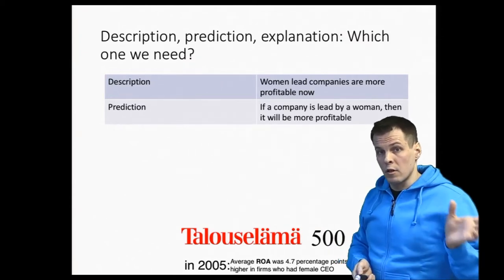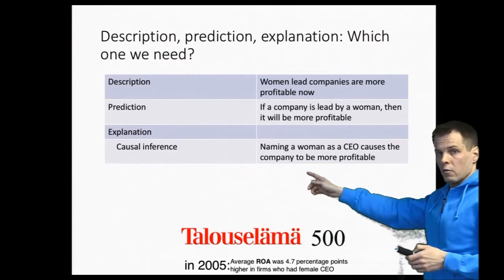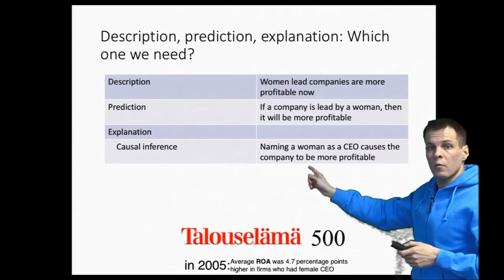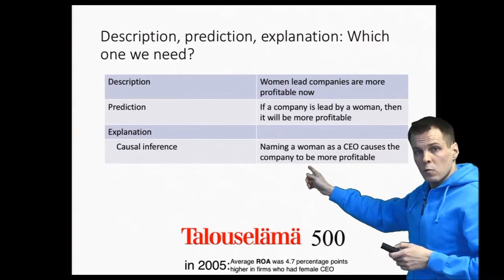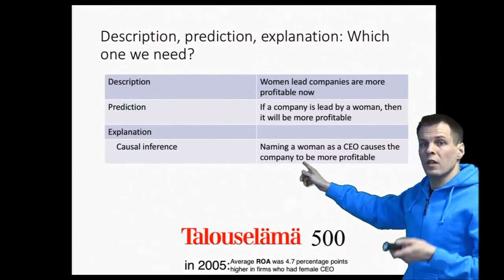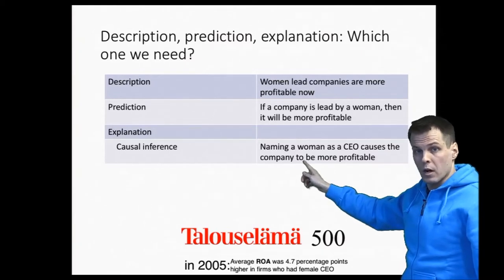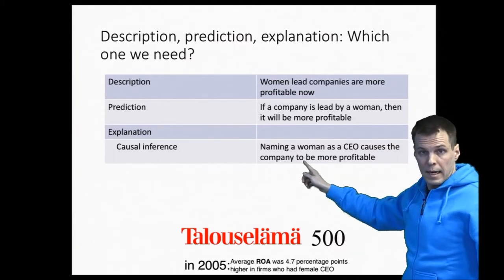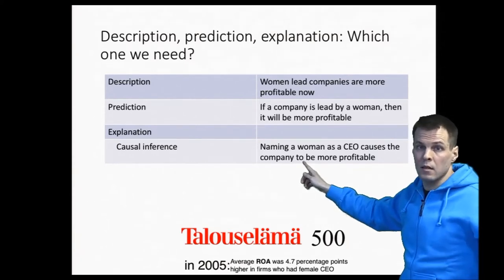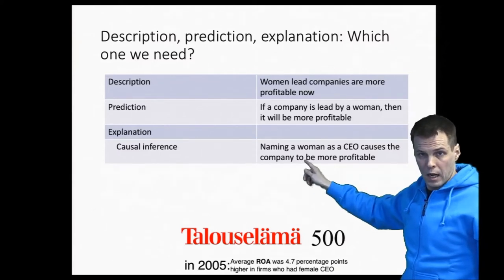Then we have the third step, which is causal inference: naming a woman as a CEO causes the company to be more profitable. Here we attribute the difference — we're not saying this is merely a correlational relationship. We attribute the difference in return on assets to women being CEOs of some companies and not others. This has clear policy implications: if you have a male CEO, you could increase your profitability by naming a woman CEO, if this claim is true.